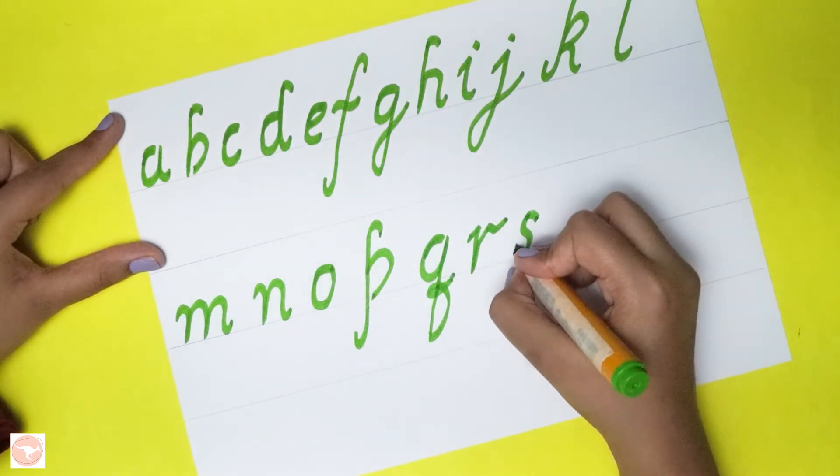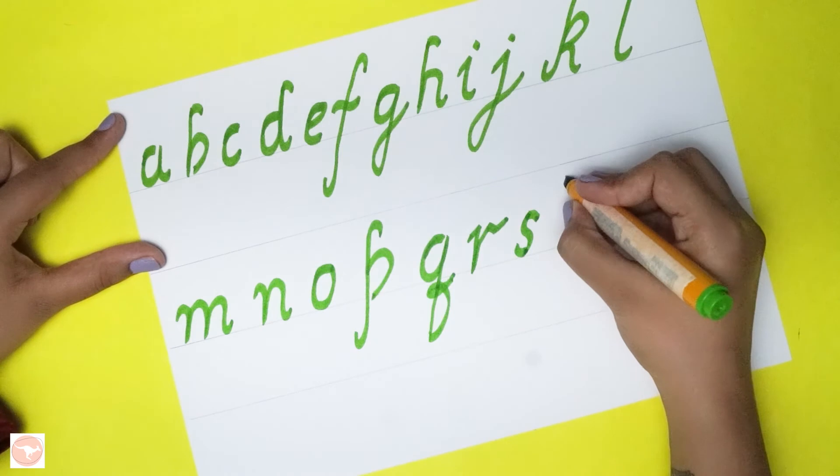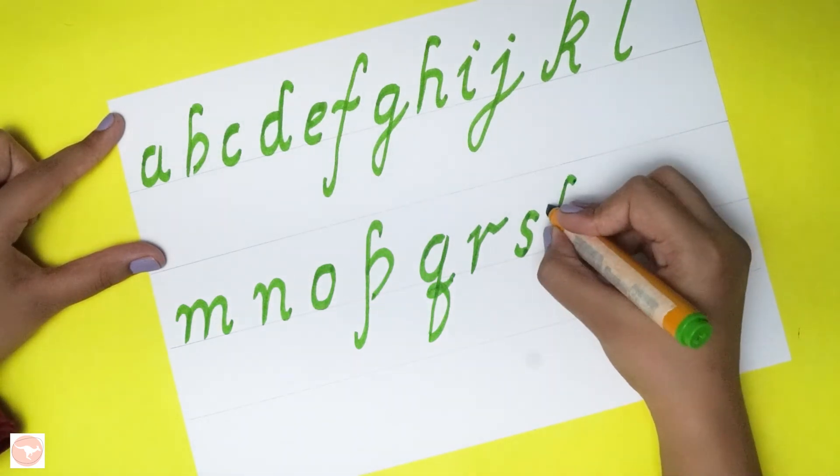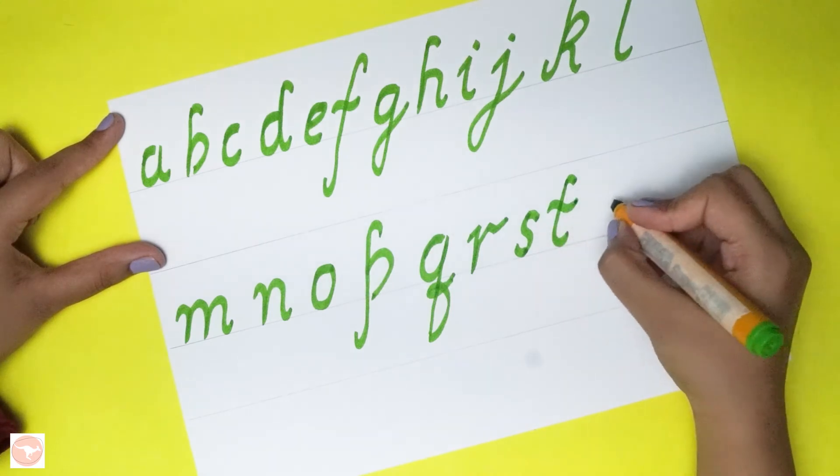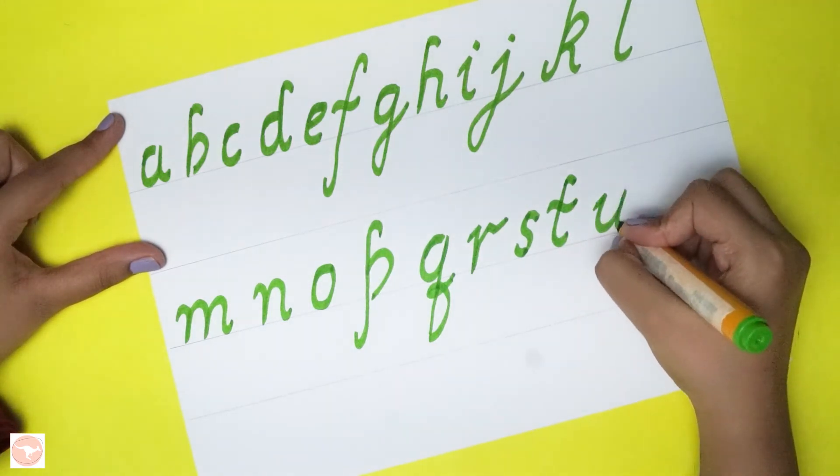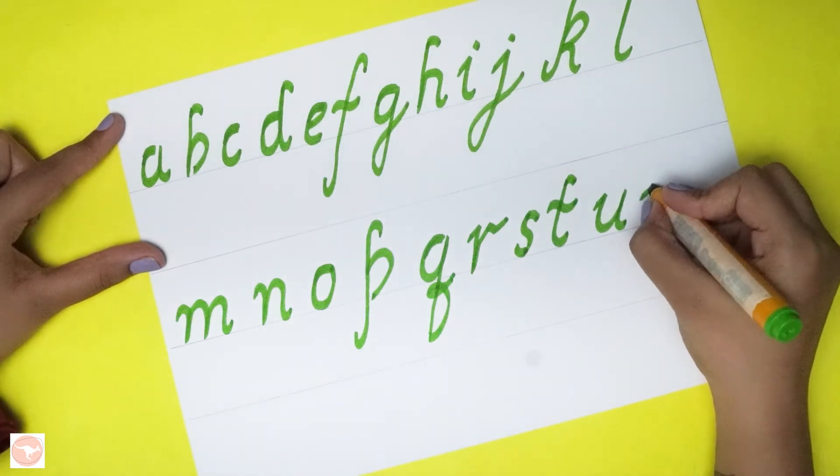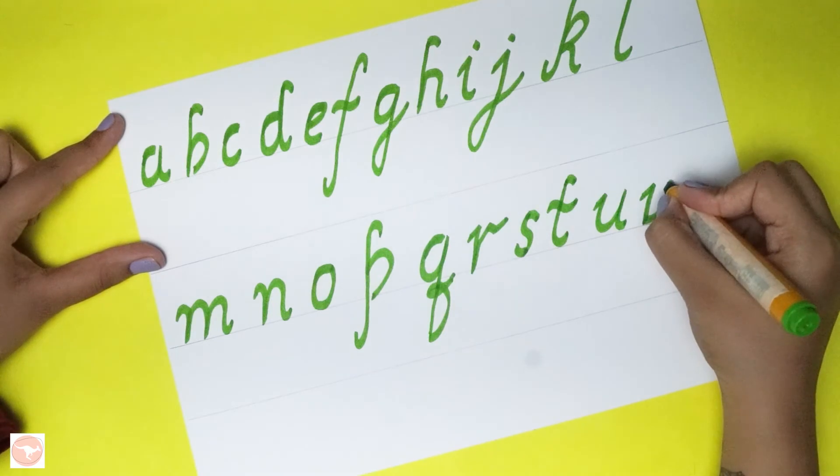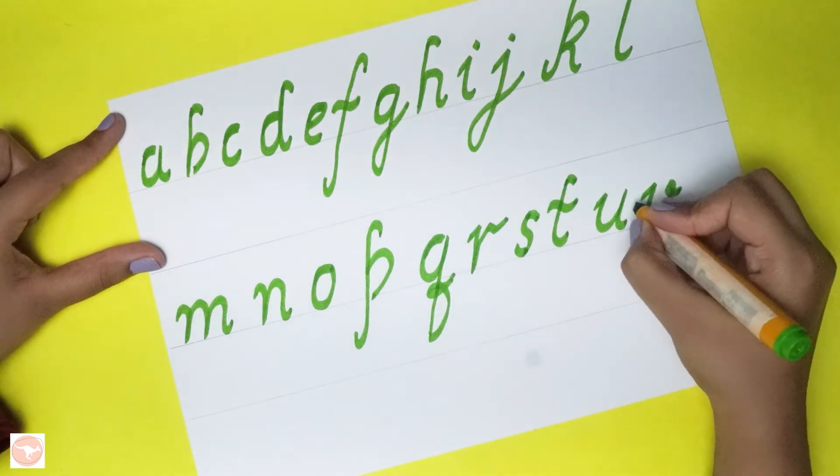R, S, T, U. Again V is similar, just this. This is different from this.